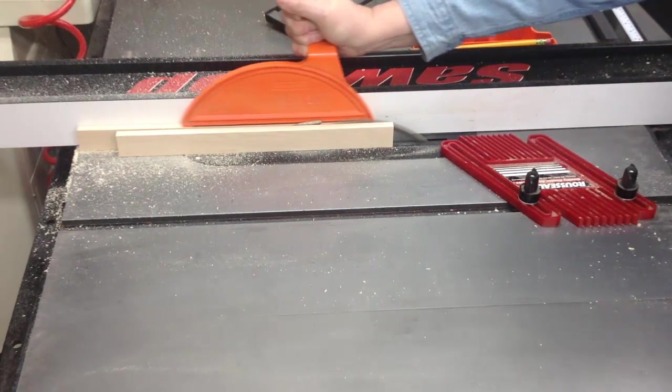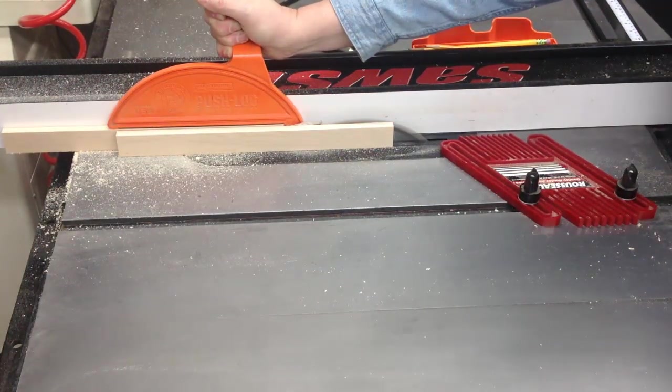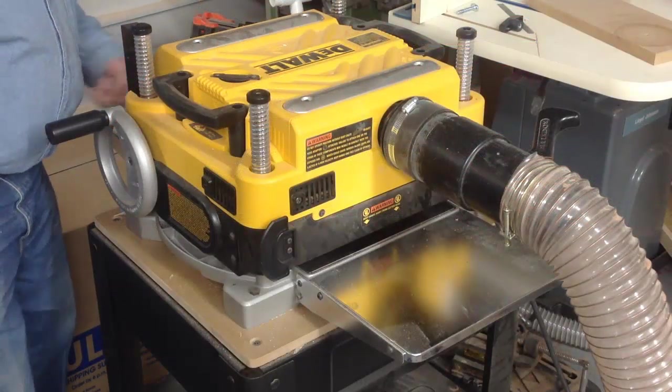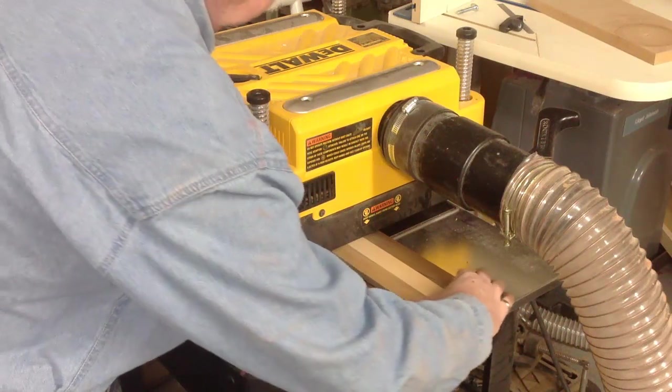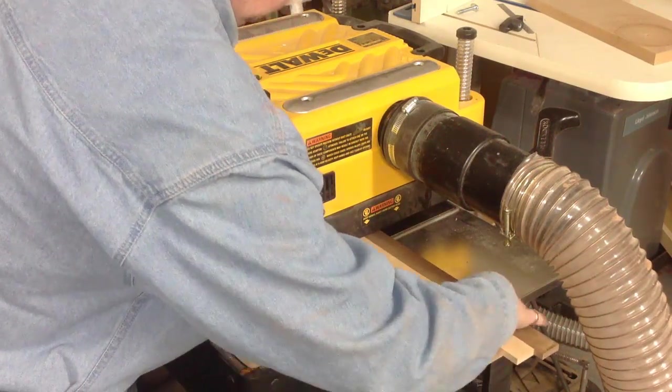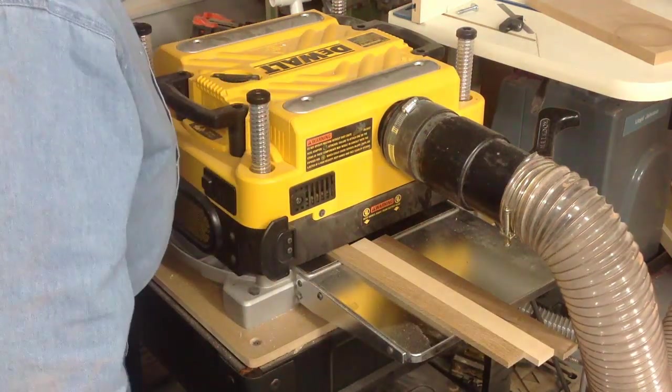I used a feather board to hold it against the fence and make sure that feather board stops before the place where the blade begins. Then take all of the wood and surface it all to 3 eighths of an inch. Surface it all at the same time so that every board is going to be exactly the same thickness.